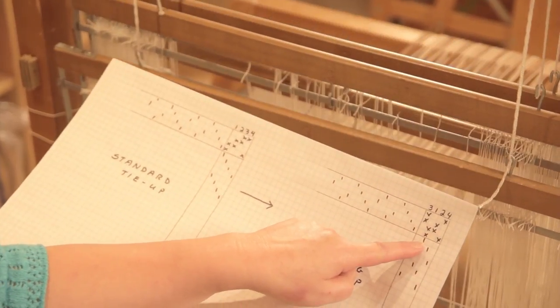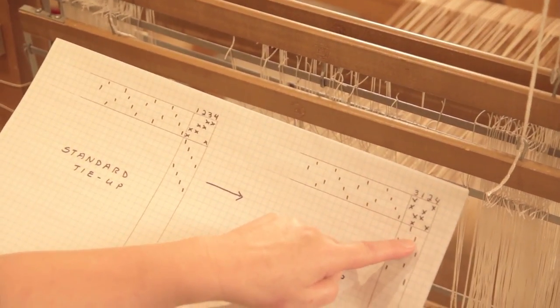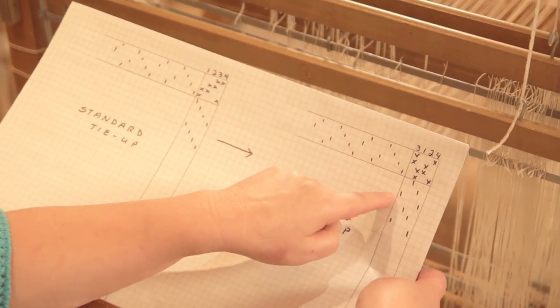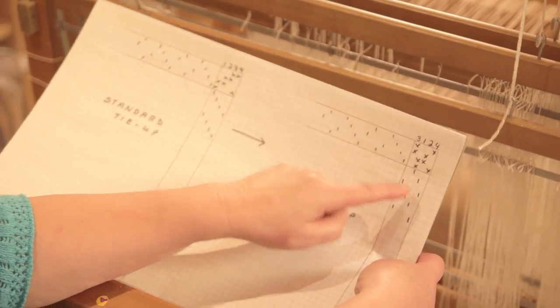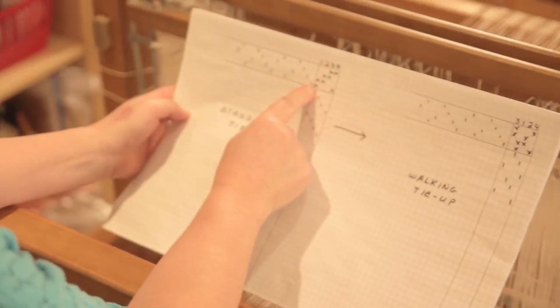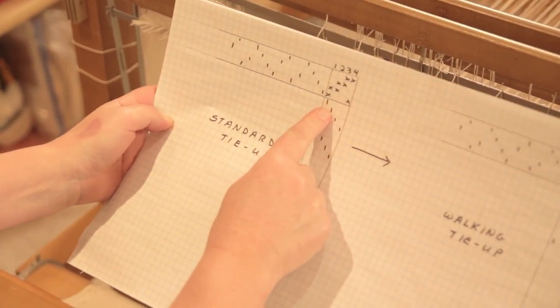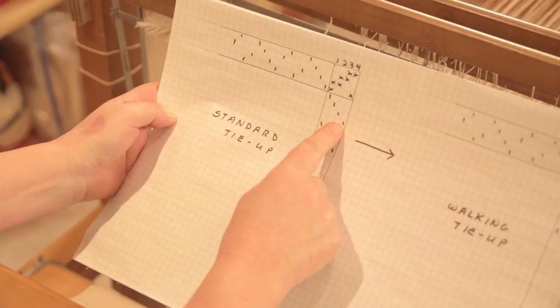That means that if I were to weave this way, I would have to look here, here, here and here which I find very confusing. So what I have done instead is I know that I have to just go through one, two, three, four to treadle. That's very easy for me to memorize.